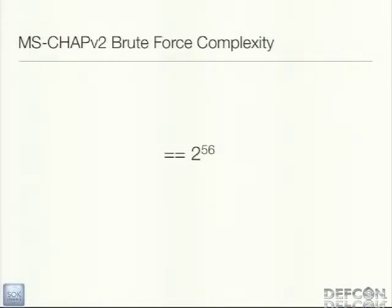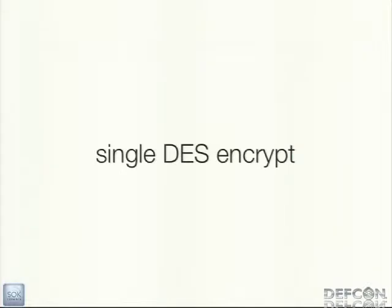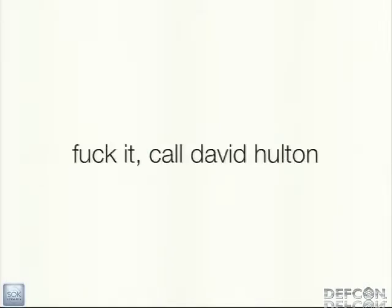So if we have an MS-CHAPv2 handshake, we can reduce the entire security of this handshake down to a single DES encryption. At that point we thought, can we do some tricks? Is there anything we can do? And at some point we were just like, let's just call David Holton, who runs a company called Pico Computing and knows stuff about brute force and keys.